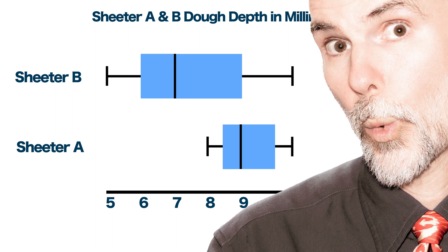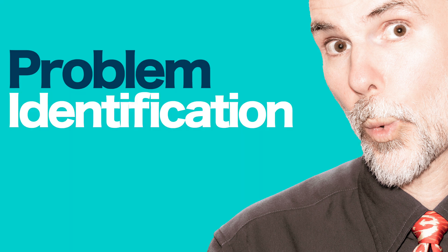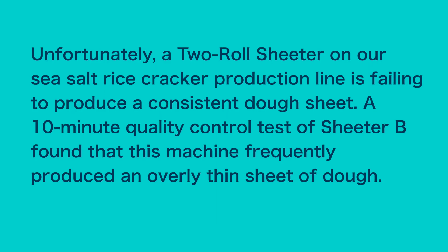Now you're ready to write a three-part description and analysis of your findings for the manufacturer who sold the two-roll sheeters to Sons Gluten. In the beginning, your executive summary should identify the issue and state how you assess the problem. For example: unfortunately, a two-roll sheeter on our sea salt rice cracker production line is failing to produce a consistent dough sheet. A 10-minute quality control test of sheeter B found that this machine frequently produced an overly thin sheet of dough.